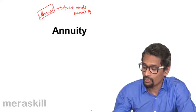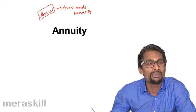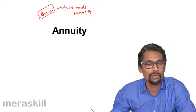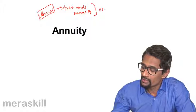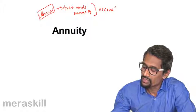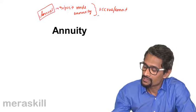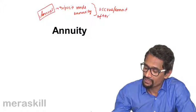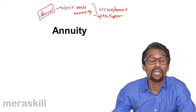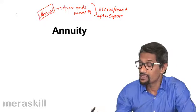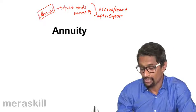The same principle is involved. Suppose you're making a fixed amount of deposit every year — what would it amount to or accrue to after, say, five years? That's what we are going to learn in terms of annuity.